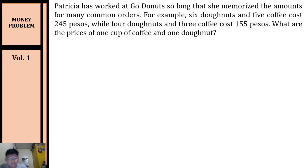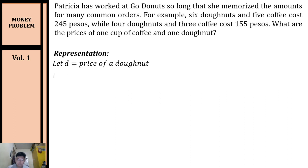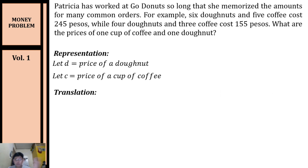Let's have our last example. Patricia has worked at Go Donuts so long that she memorized the amounts for many common orders. For example, 6 donuts and 5 coffees cost 245 pesos, while 4 donuts and 3 coffees cost 155 pesos. We're looking for the price of one donut and one cup of coffee. Let d be the price of a donut and let c be the price of a cup of coffee.